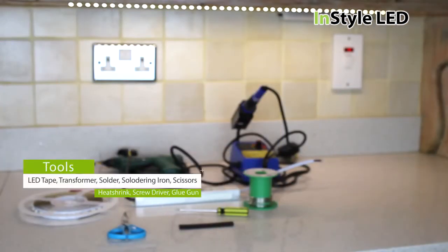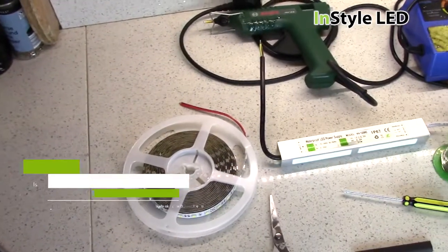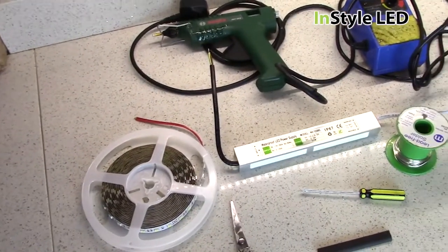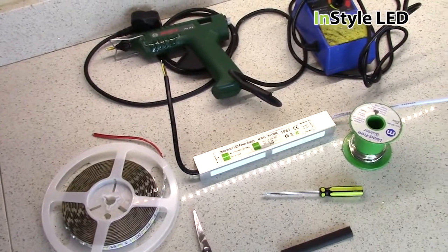The tools required for the installation are the following: the LED tape, a transformer, solder and soldering iron, scissors, heat shrink, screwdriver and a glue gun.